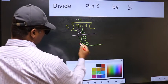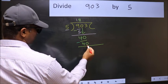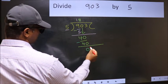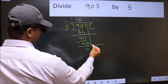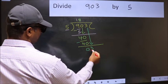Now you should subtract. 40 minus 40, 0. After this, bring down the beside number. So 3 down.